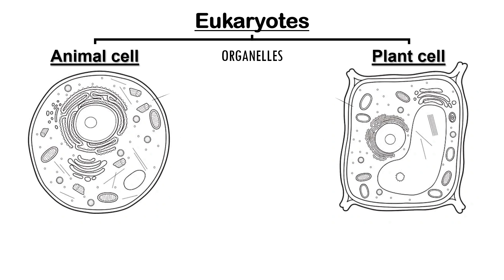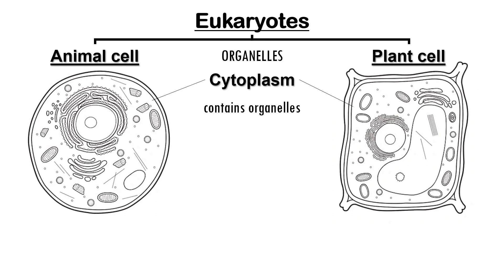Both cells are filled with a jelly-like substance called cytoplasm. This is where all the other organelles are suspended. Cytoplasm is also the site of many chemical reactions that keep the cell alive and functioning. You can imagine cytoplasm like the water inside a water balloon, but with a thicker jelly-like consistency.